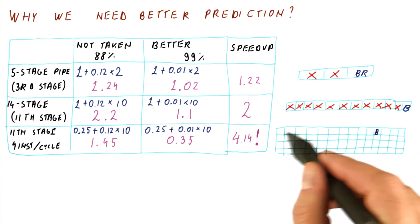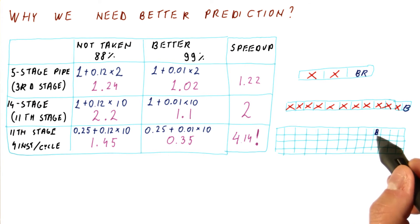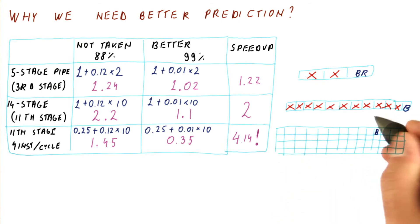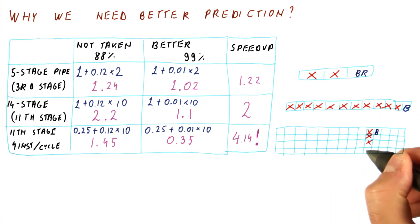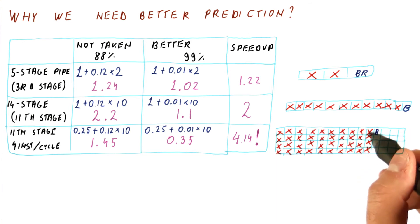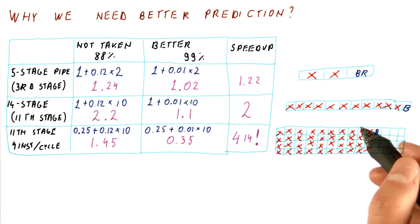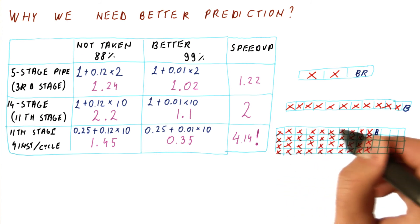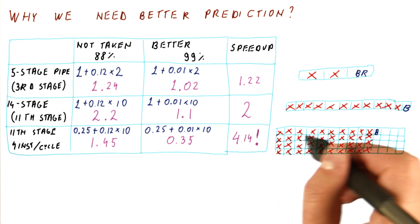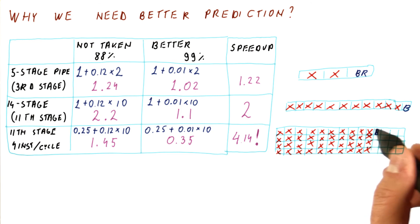When we have a four-instruction-per-cycle processor that resolves branches in the eleventh stage, after we have fetched this branch, we have fetched a lot of instructions — four instructions in the next cycle, and four instructions in the cycle after that. So when we mispredict the branch, we waste 40 instructions that we could have done if the prediction was correct. The cost of a misprediction is much higher, and it's much more important to predict branches correctly.